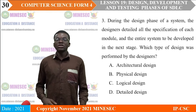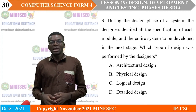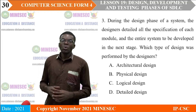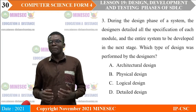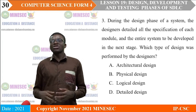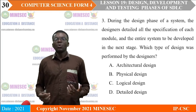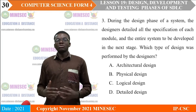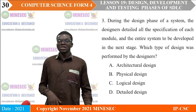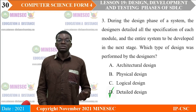During the design phase of a system, the designers determined all the specifications of each module and the entire system to be developed at the next stage. Which type of design was performed? A. Architectural design, B. Physical design, C. Technological design, D. Detailed design. The correct answer is D — detailed design.